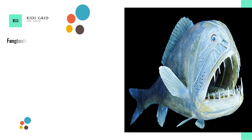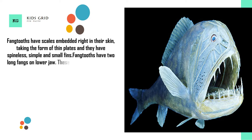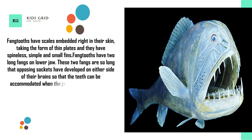Fangtooths have scales embedded right in their skin, taking the form of thin plates, and they have spineless, simple, and small fins. Fangtooths have two long fangs on the lower jaw. These two fangs are so long that opposing sockets have developed on either side of their brains so that the teeth can be accommodated when the jaws close. Juveniles are different from adults in their physical appearance.